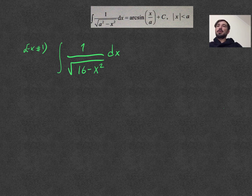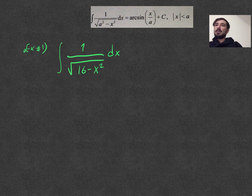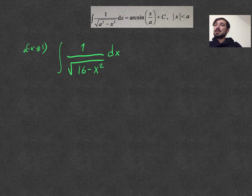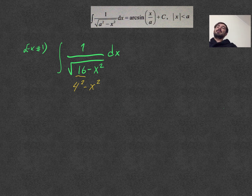Hi everyone, today in this video we are going to learn how to take the integral of a standard integral in this form. First of all, we need to check the coefficient of x squared. Here it is 1, and in the formula it's also 1. And 16 is the same as 4 squared, so we have 4 squared minus x squared — that helps us a lot because in this case it's straightforward; we will just use the formula.